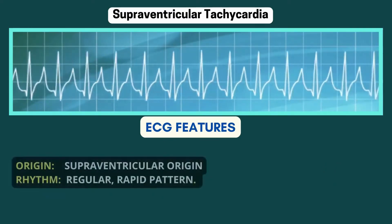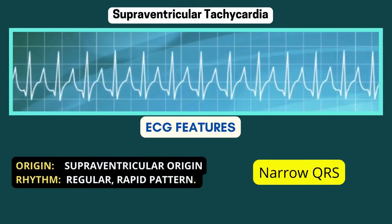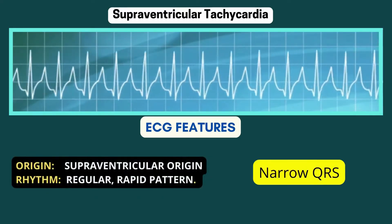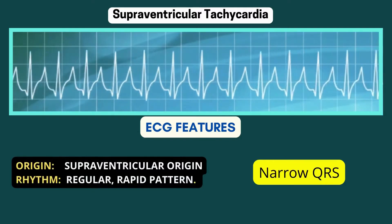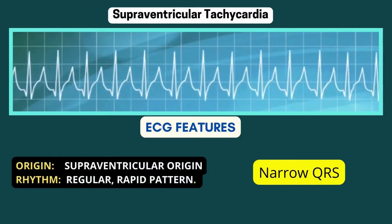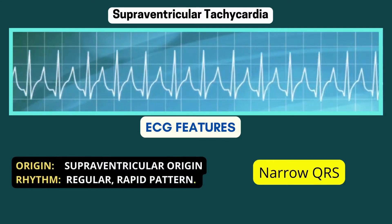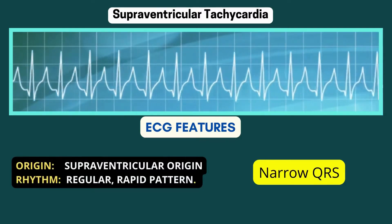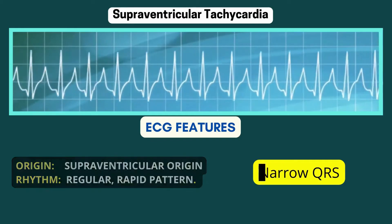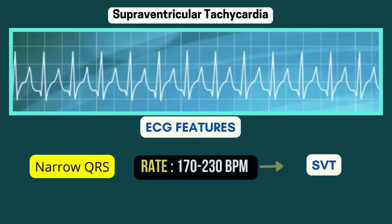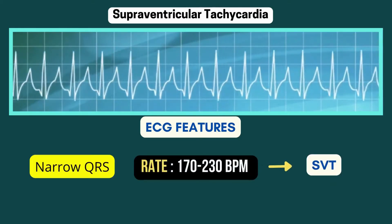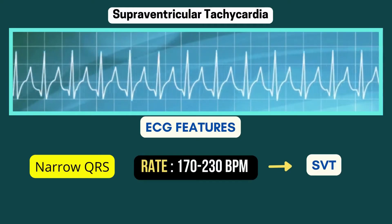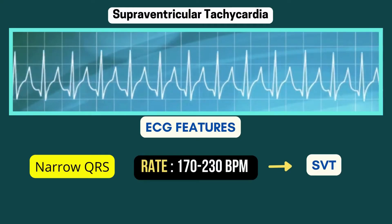This rhythm is most likely not sinus tachycardia due to its very fast rate. For those who are at rest, narrow QRS tachycardias over 150 per minute are most often supraventricular tachycardias or SVT.